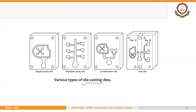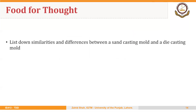Another type of solidification process for metals is die casting. The sand casting has a mold made up of sand as its major composition, but in die casting we have a metallic mold or metallic die. We won't be directly discussing the design of die casting dies, but the design of these dies is technically very similar to the design of injection molds, which we will be discussing in the last module. As food for thought, list down similarities and differences between sand casting mold and die casting mold.